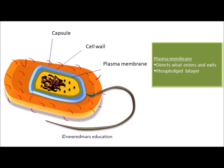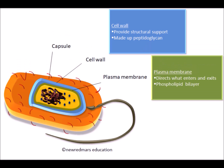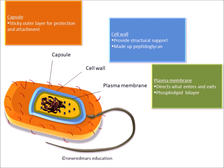Next to the plasma membrane is the cell wall, which provides structural support to the bacterial cell. It is made up of peptidoglycan, which is a polysaccharide. The cell wall has the most important role when we come to understand Gram-positive and Gram-negative bacteria. The third layer is the capsule, which is the sticky outer layer for attachment and protection of the bacterial cell.